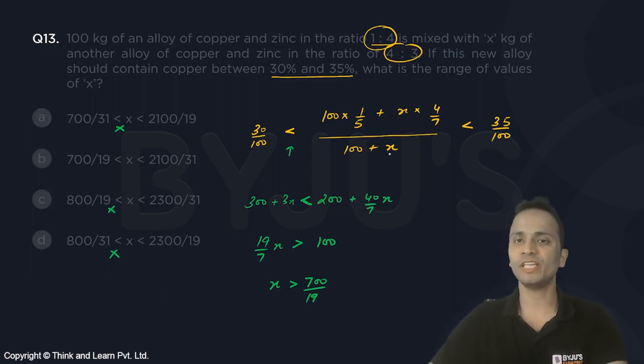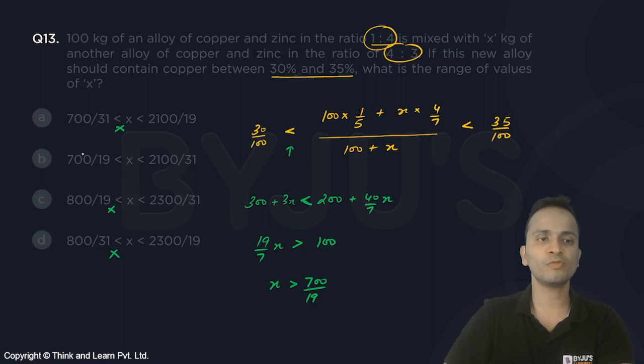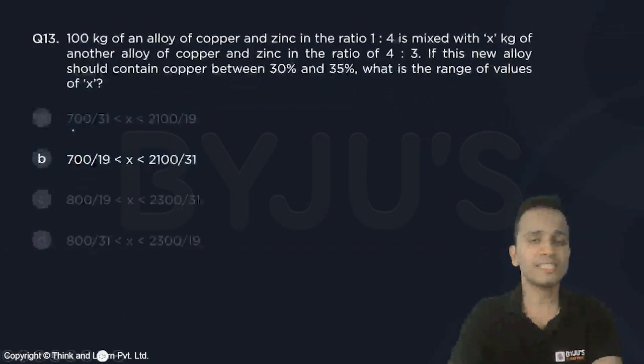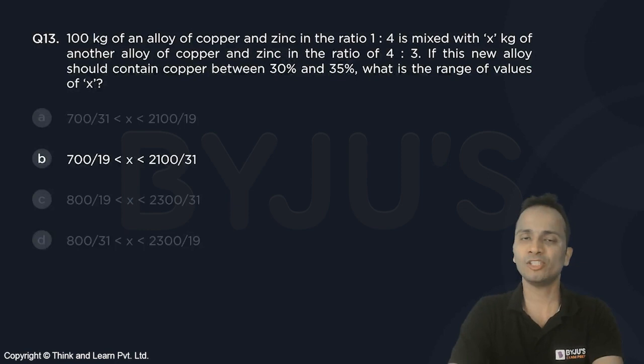Because we have already known that x will be greater than 700/19, which matches with option B. So it is pretty much safe to mark option B as your final answer.